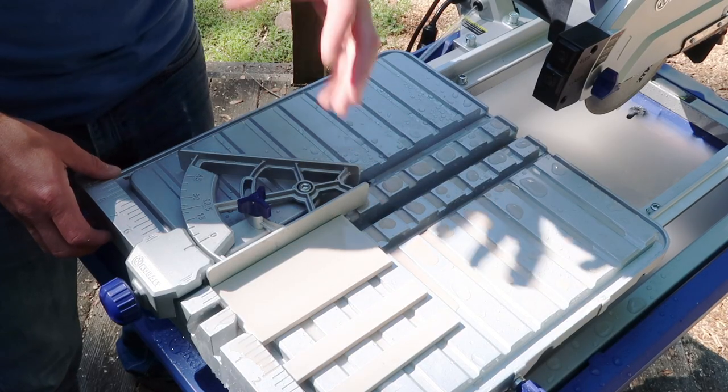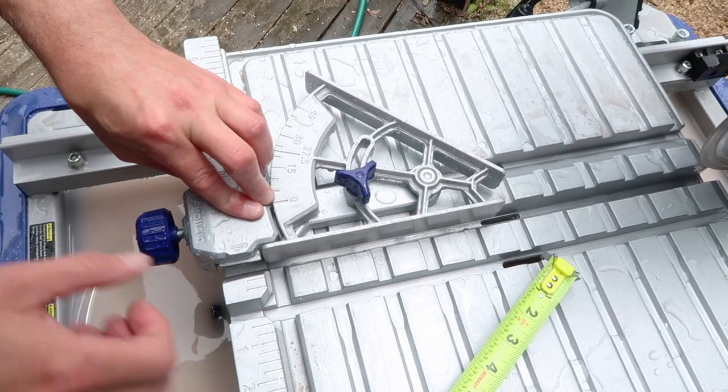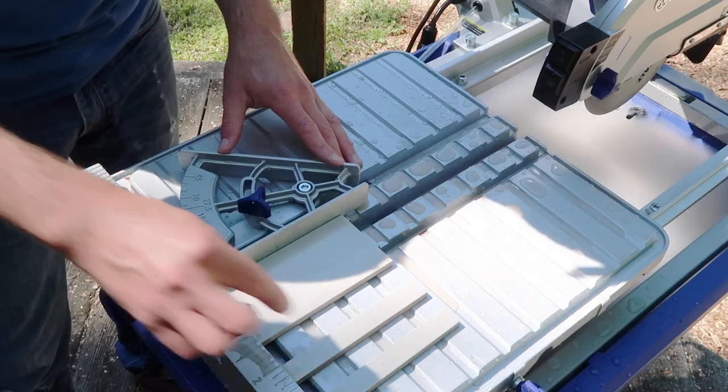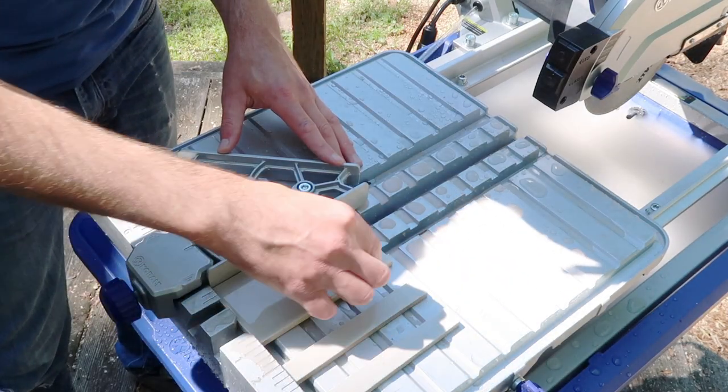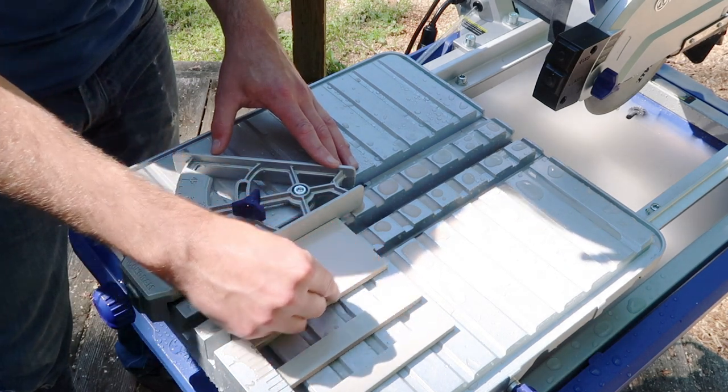If you're in a position like under a window sill for example where you need to make a bunch of the exact same cut, most wet saws will come with a right angle stop that you can adjust side to side. So I've already made two here, I need to make a third, so essentially I left my stop in place and this is going to repeat my cut exactly.